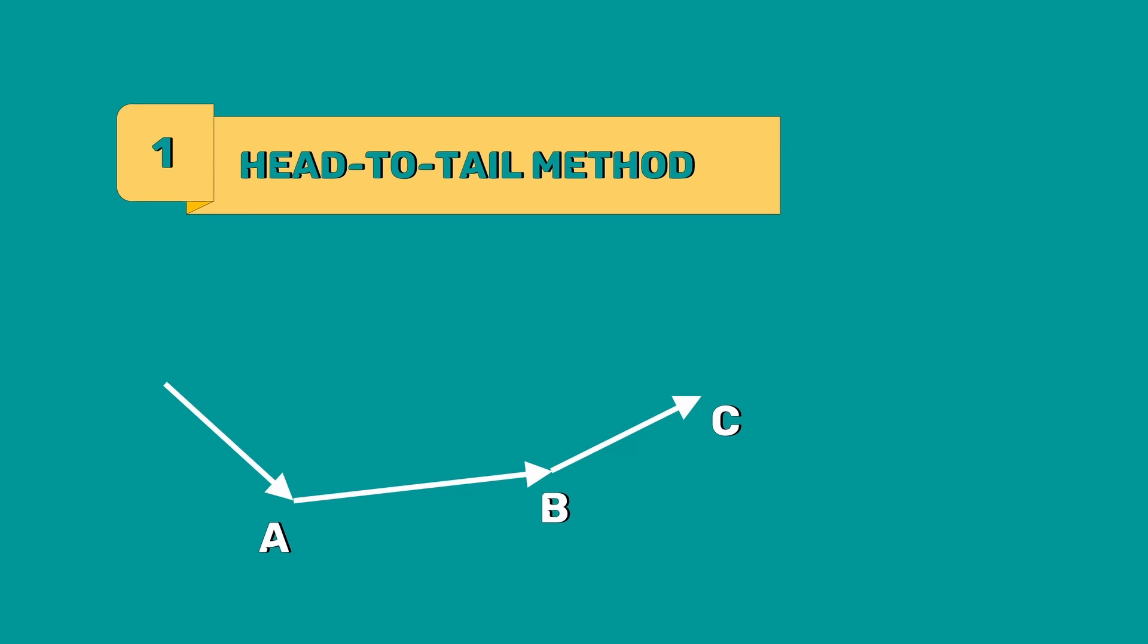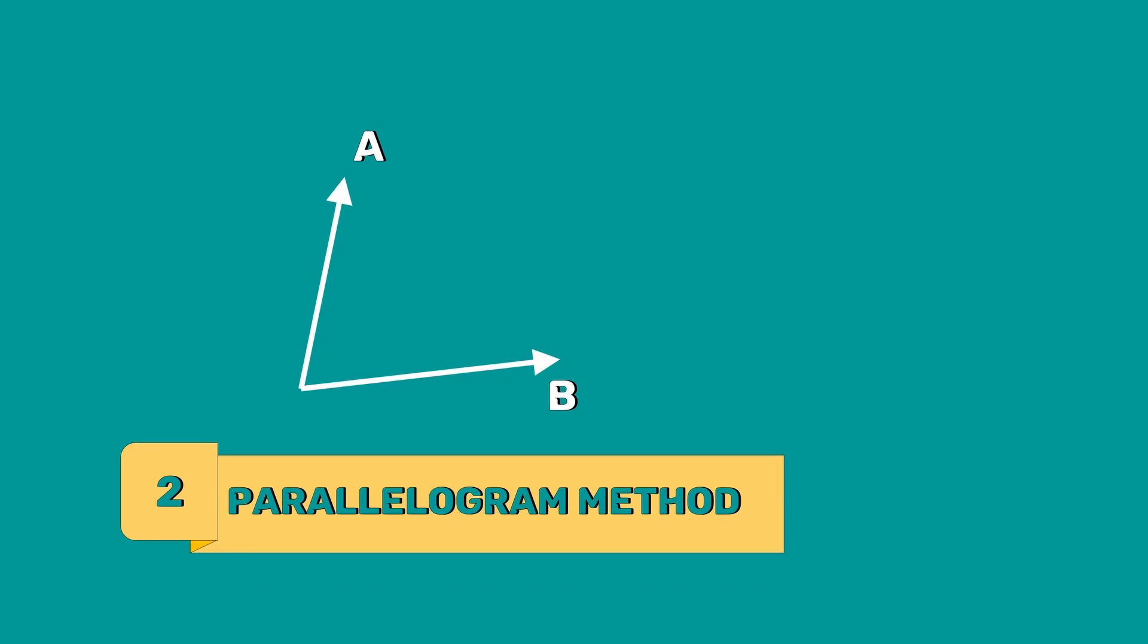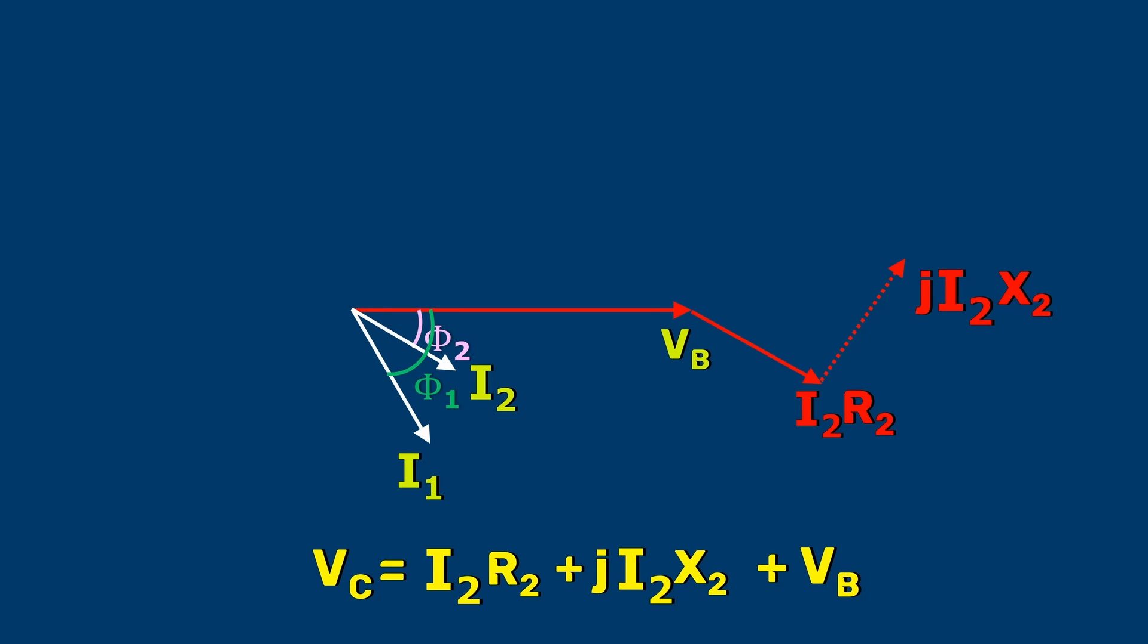The resultant vector is drawn from the tail of the first vector to the head of the last vector. When two vectors are placed at the same initial point, we have to use the parallelogram method. Here, we have to form a parallelogram. The diagonal of the parallelogram is the resultant vector. In our case, we can use the head-to-tail method. It is very clear that the resultant vector is VC.